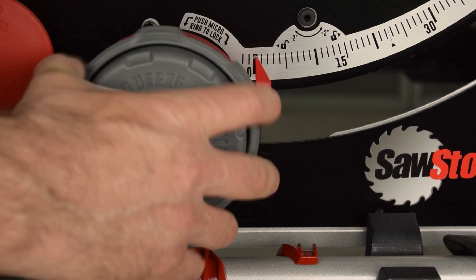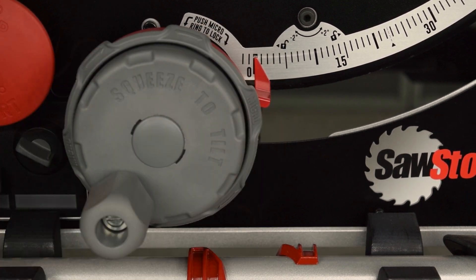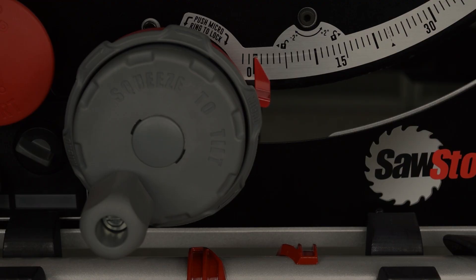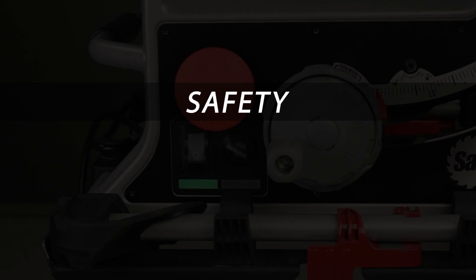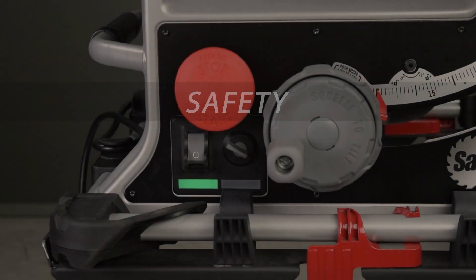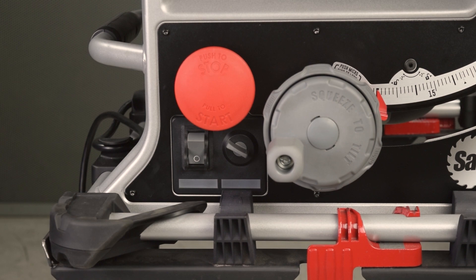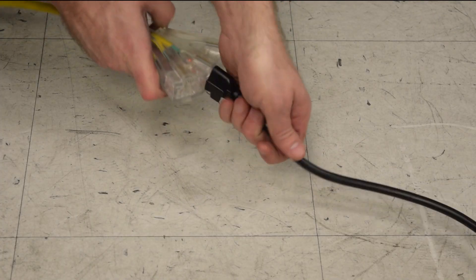When finished using the micro bevel, it's important to remember to reset the mechanism to zero. As always, take precautions before working on the saw. Turn off the power switch. Unplug the saw.